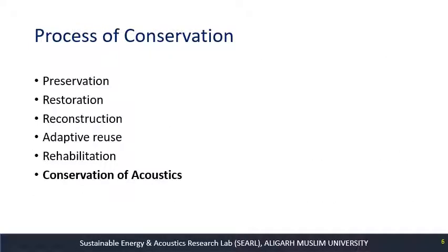The process of conservation is manifold. Conservation of a heritage building can be done through preservation, restoration, reconstruction, adaptive use, and rehabilitation. All of these processes mainly deal with preservation of the structure and the visual aspects of the monument. What we are saying here is that, along with that, we also need to preserve the acoustics — the acoustical aspects of our heritage — just as we preserve the visual aspects. This is the topic for today's main discussion.